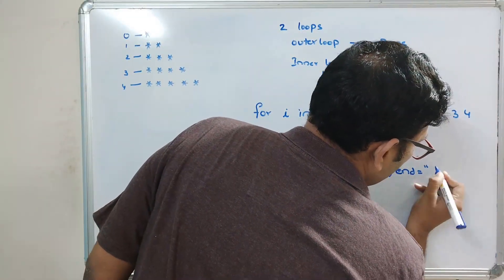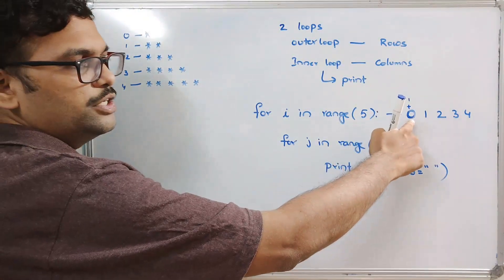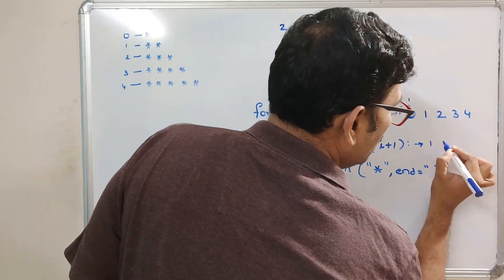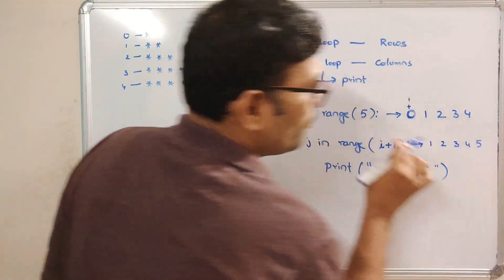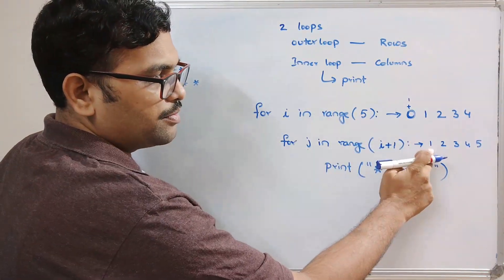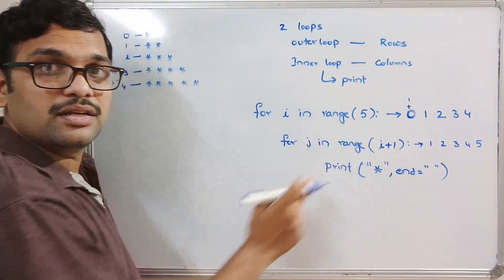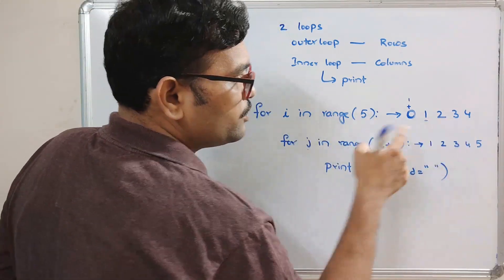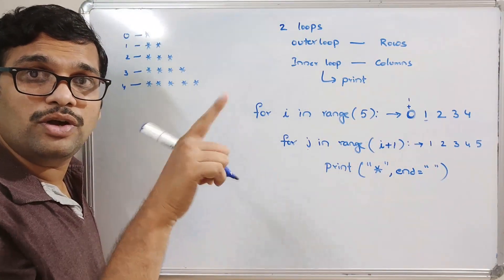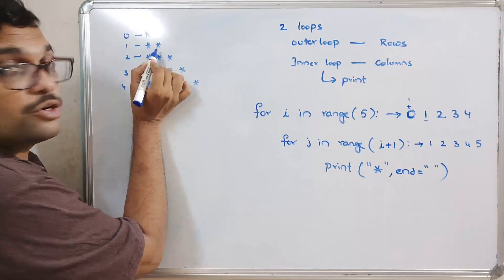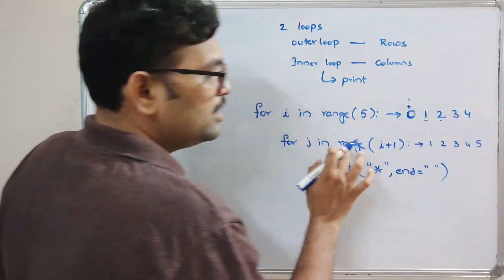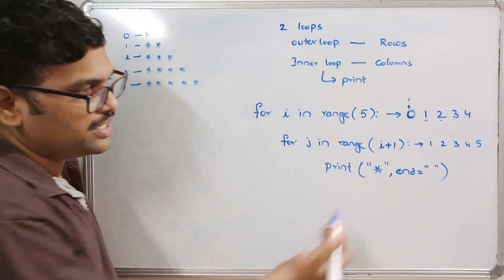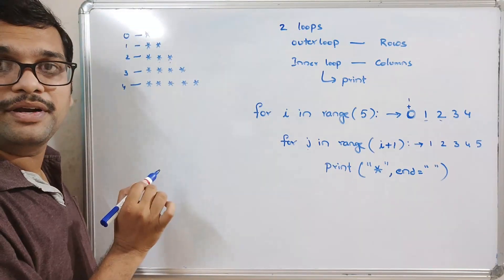When i is 0, `range(i+1)` is `range(1)`, so j iterates once — one star is printed. When i is 1, `range(2)` means j goes 0 and 1 — two stars are printed. When i becomes 2, `range(3)` gives three iterations — three stars are printed.